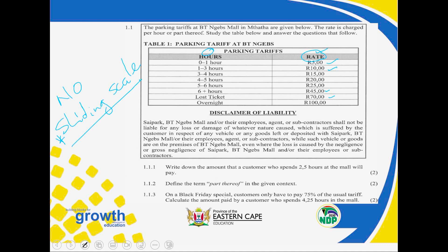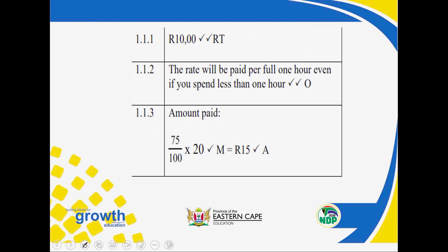In calculation, we don't do much. We just have to take the amount from the table. For example, zero to one hour is going to be five rand. Looking at the questions, they define the term 'part thereof' in the given context. The rate will be paid per full one hour, even if you spend less than one hour.